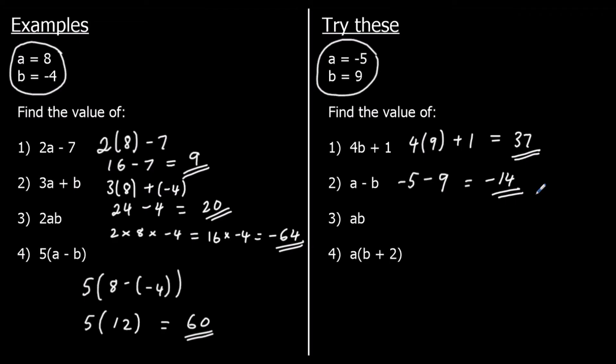Question 3: ab, meaning a times b. So negative 5 times 9. A negative times a positive is negative, and 5 times 9 is 45, so the answer is negative 45.